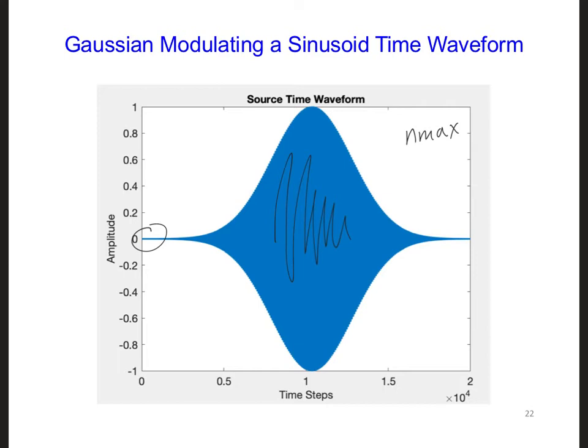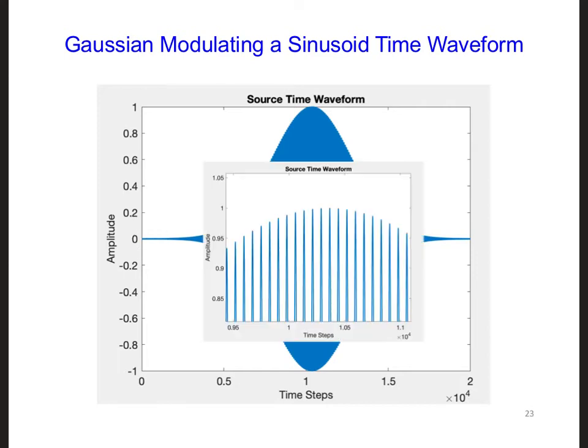For example, if we zoom in on the peak of the time waveform, as I've done here, you'll see that what looks like a solid block of blue is actually just a lot of oscillations from the sinusoid, which has a fairly high center frequency relative to the width of the Gaussian.